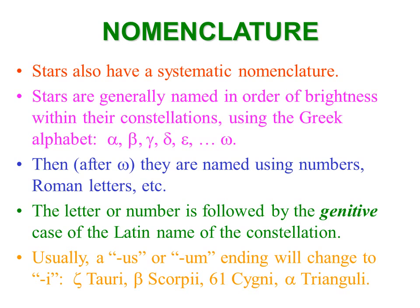Stars have a systematic nomenclature — scientific names generally given in order of brightness within the constellations using the Greek alphabet. Johann Bayer, a German lawyer and celestial cartographer, published in 1603 the first great star atlas, Uranometria — the first to cover the entire celestial sphere, with over a thousand stars. He tried to rename the northern constellations from the New Testament and the southern ones from the Old Testament, but that obviously didn't catch on.